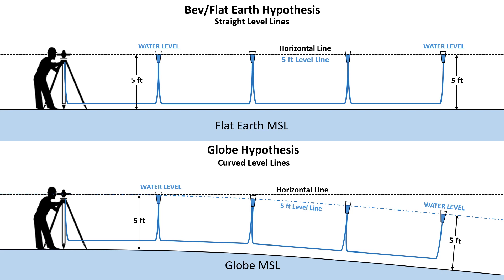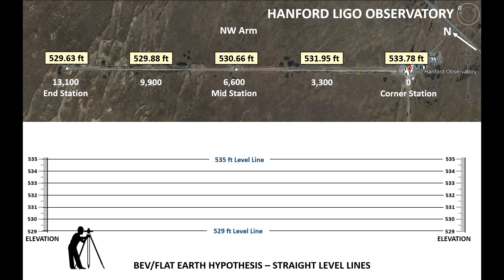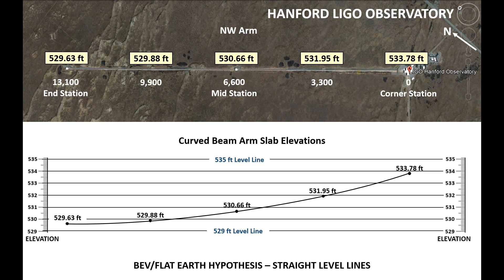That's why I've used water levels in these graphics to show the difference between the two models. Up above we have water levels at a five-foot elevation, meaning a five-foot level line is one and the same as a horizontal line as determined by a surveyor's instrument. I also added Bev to the hypothesis because he believes the exact same thing. Now the only difference with the globe hypothesis is that the level line curves down from the surveyor's instrument. Here is a graph with straight level lines between 529 and 535 feet, and plotting those five elevations shows a beam arm slab that is clearly curved.